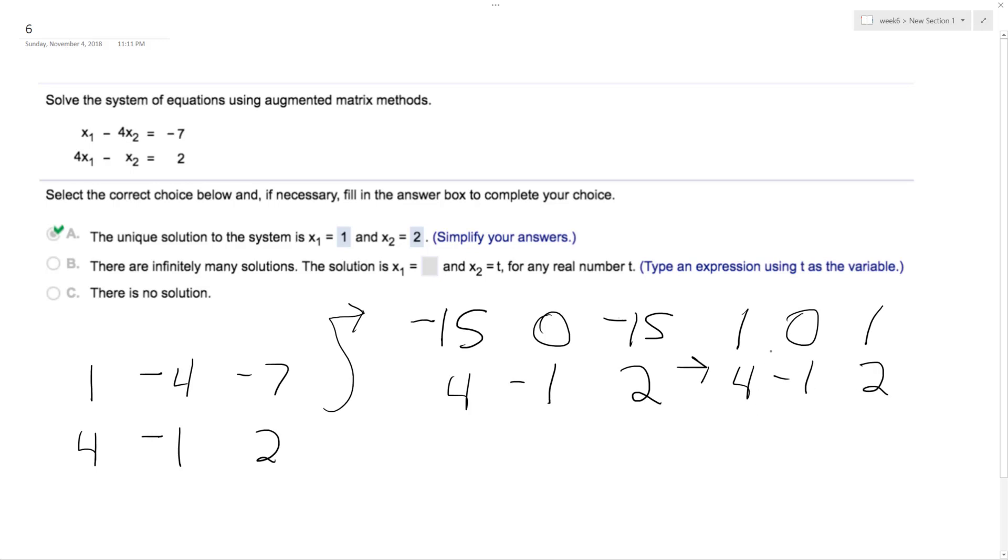So on the bottom, what I can do is I can multiply the top row by negative 4 and add that to the bottom, so I get 1, 0, 1, 0, negative 1, and then negative, negative 2.